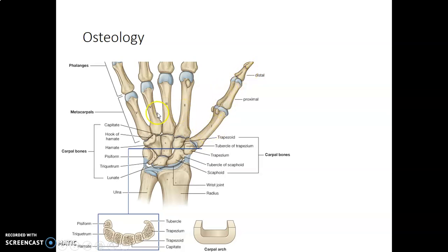These are the metacarpals: one, two, three, four, five. You start naming from the thumb, which is the first digit. So this is your scaphoid, lunate, triquetrum and pisiform. Then trapezium, trapezoid, capitate — which is the largest — and then the hamate with its hook. It's the distal portion of radius and distal portion of ulna.